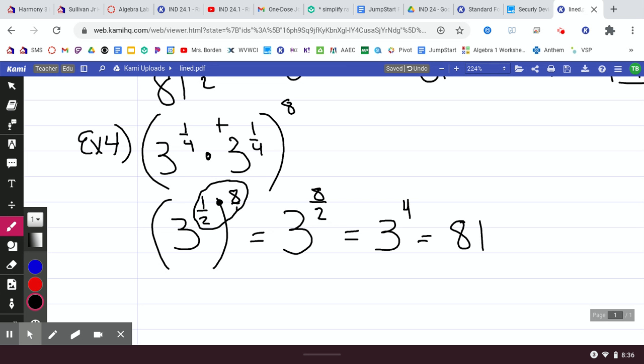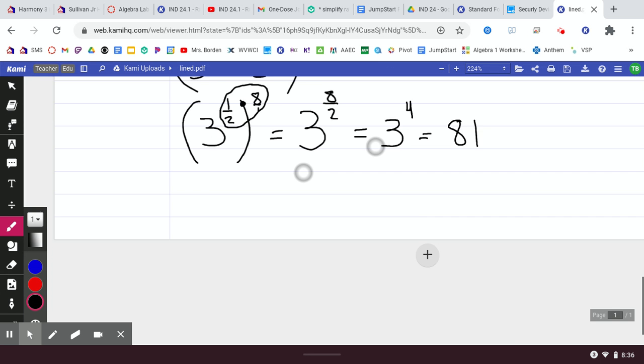And we always simplify our fractions if we can. So 8 over 2 reduces to 4. And so now you just take 3 to the fourth power, which is 81. So you still just have to use the operations of math, PEMDAS, that you know. You work within the parentheses first, simplifying anything in the parentheses that you can. Then you apply any exponents. That's the E in PEMDAS. And then you change it to a radical if you need to, and you work it like you did yesterday.